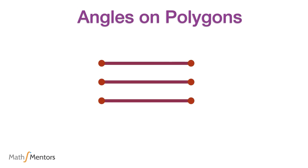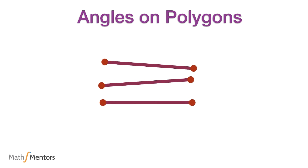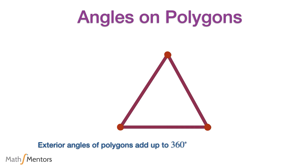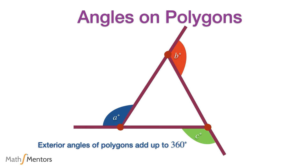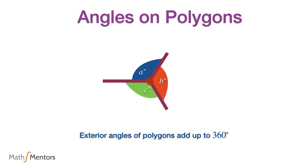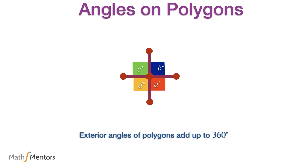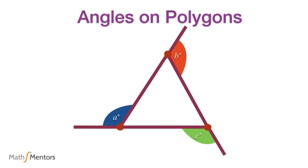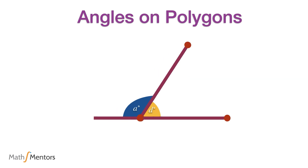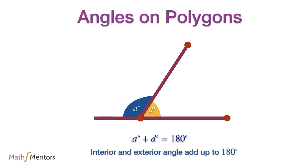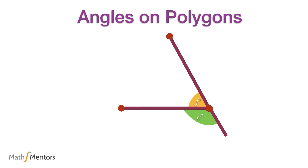There are other properties of polygons needed to answer GCSE maths exam questions. If we extend each side of a triangle, we create exterior angles, and the total exterior angles on a triangle add up to 360 degrees. In fact, exterior angles of any polygon add up to 360 degrees. Furthermore, each exterior angle and its corresponding interior angle lie on a straight line, so they add up to 180 degrees. This is true for any polygon.